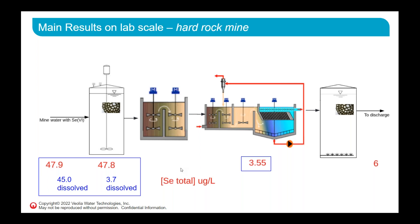The water then went to the active flow — through metal precipitation, surface complexation, and active flow clarification. A measurement of total selenium in the clarified water showed we were down to 3.5 ppb total selenium — most particulate selenium removed and some dissolved selenium reduced at this stage.